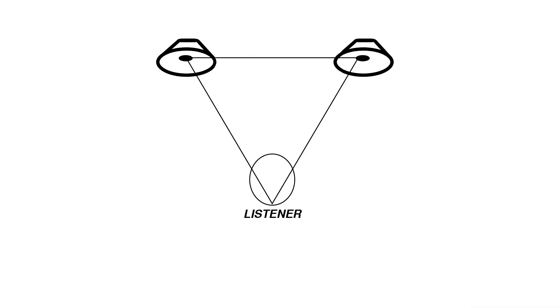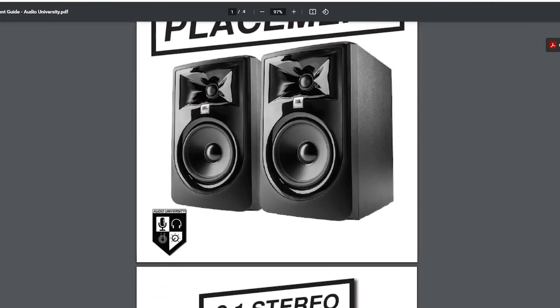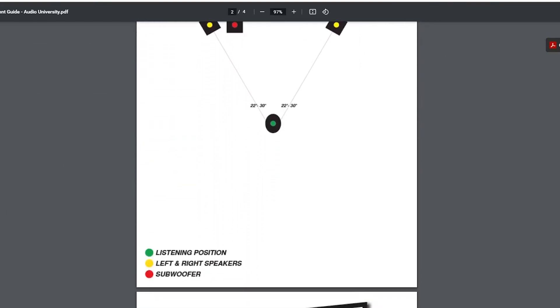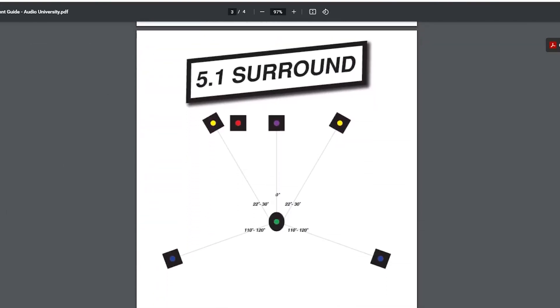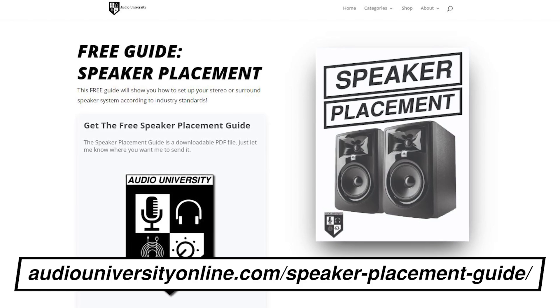This one is also extremely common, because we almost always use two or more speakers in a sound system. In a mixing studio environment, as long as the listener is in the right position, the sound from the left and right speaker will reach the listener at the same time. However, what happens when the mixing engineer steps over to the equipment rack to make some adjustments? Now the sound from the left speaker takes a longer path than the sound from the right speaker. You can download a speaker placement guide for free at audiouniversityonline.com/speaker-placement-guide.